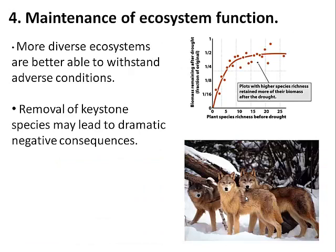Maintenance of ecosystem function is an important aspect of biodiversity — more diverse ecosystems are better able to withstand adverse conditions. Looking at a graph from the text, we see plants that went through a drought, with biomass remaining after the drought on the y-axis and species richness on the x-axis. With fewer species, fewer plants remain after the drought. The more species present, the more plants survive. Increasing biodiversity has a positive influence on the survival of plants through a drought.